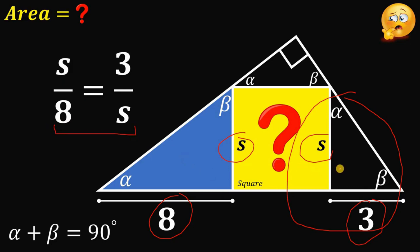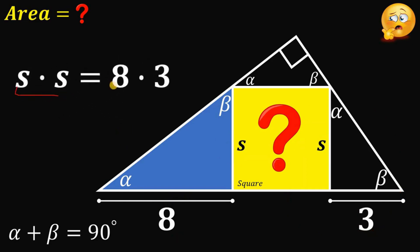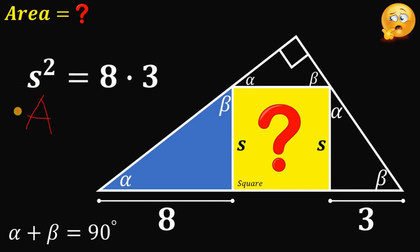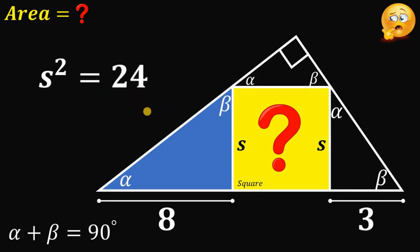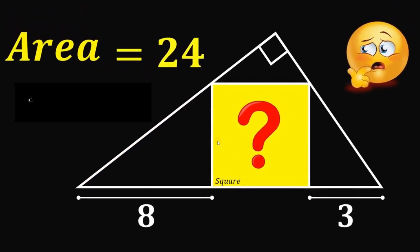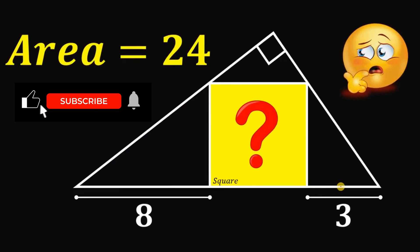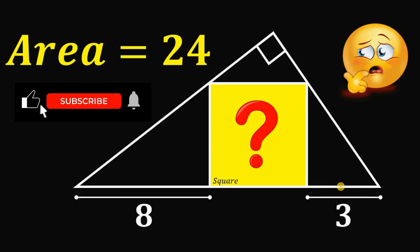Now we can solve for s squared, which is the area of the square. We cross multiply: s times s equals 8 times 3. Since s times s equals s squared, and s squared is the area of the square, we get s squared equals 8 times 3, which equals 24. Therefore, the area of this square inside the right triangle must be equal to 24 square units. And as always, we are done.